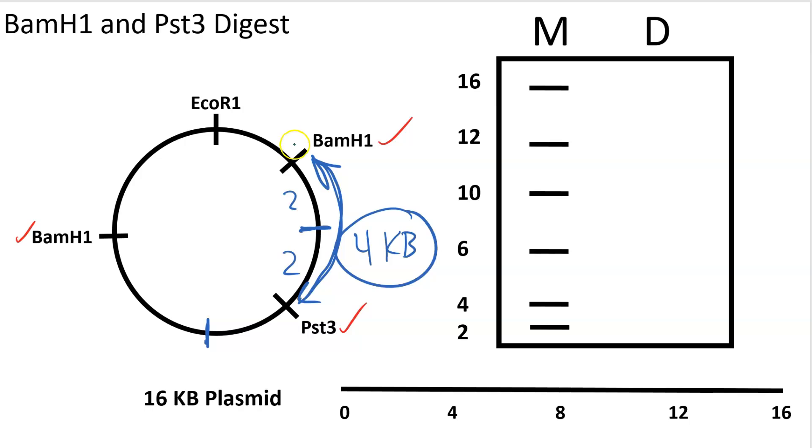The second fragment that you'll get runs from this BamH1 past this EcoR1 and to this BamH1. So again, if you're looking at the quadrants here, this is 4 plus 2 here, so this together would be 6 KB. And we'd also have a third and final fragment that's spanning this quadrant plus 2, so that's 4 plus 2, giving you a fragment that is 6 KB in size. So as I mentioned before, you're going to get a 4 KB fragment, and then you're going to get 2 6 KB fragments. These will be the same size, but it does span the entire 16 KB length of the plasmid.